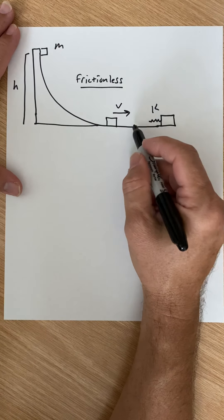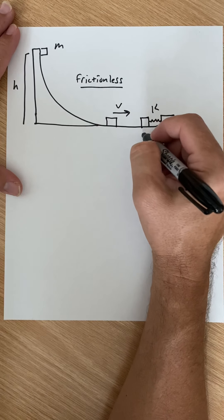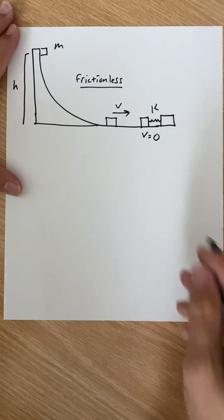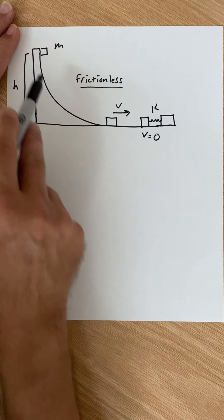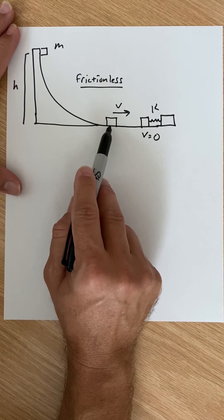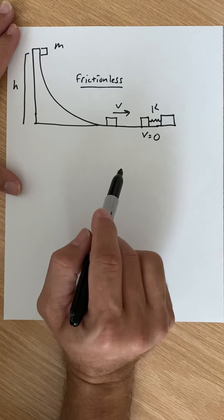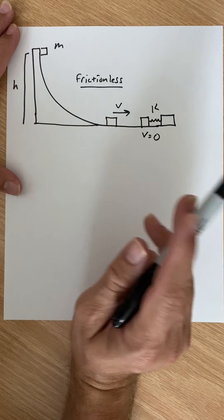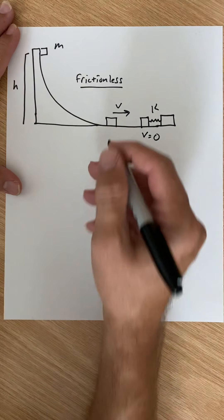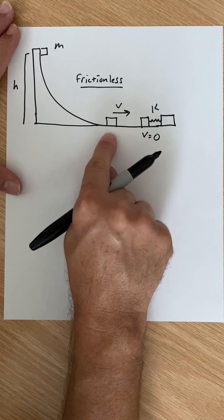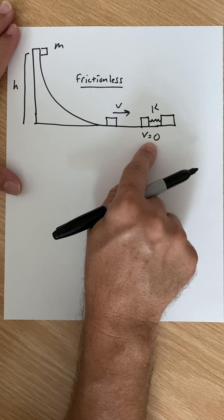Ultimately, this mass is going to end up with the spring compressed and come to rest. So it's going to slide down the ramp, have some velocity at the bottom, compress the spring, and come to rest. What we're going to ask is: what is the velocity at the bottom of the ramp, and how far did the spring compress before the mass stopped?